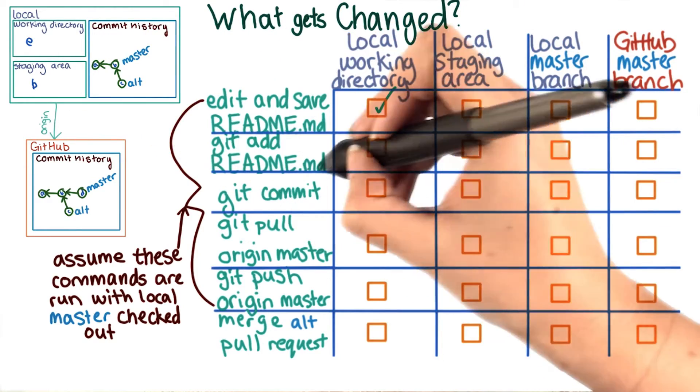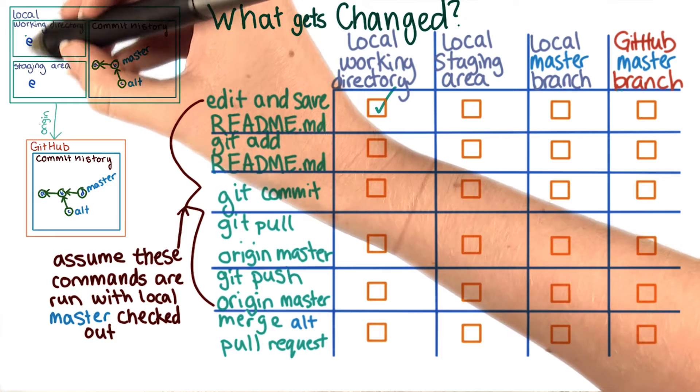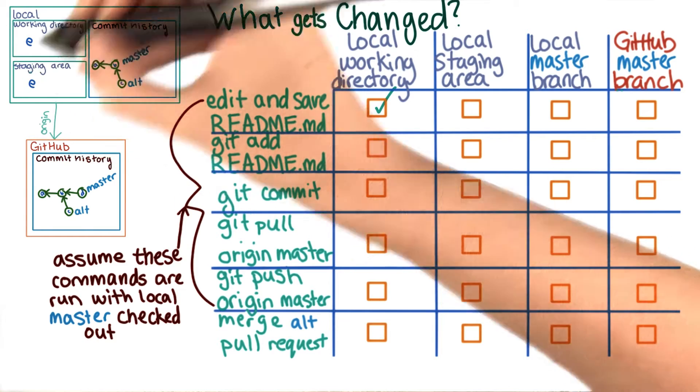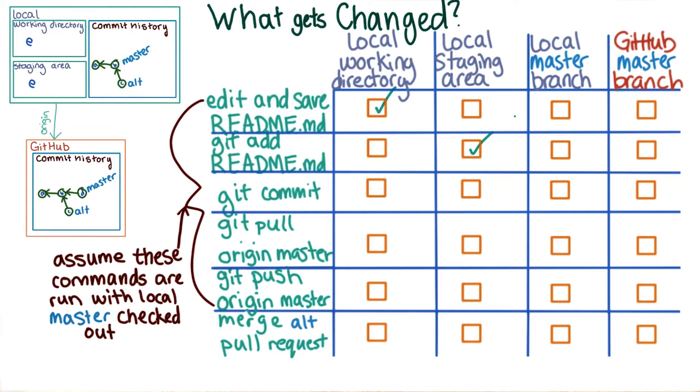What about this one? git add readme. This will take the change from the working directory and add it to the staging area. So the staging area will be changed.